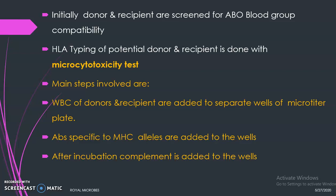The main test involved in HLA typing is the microcytotoxicity test. The main steps are: WBCs from the donors and the recipients are added into separate wells of a microtiter plate. Antibodies specific to MHC alleles are then added into the wells, and monoclonal antibodies are chosen for microcytotoxicity testing.